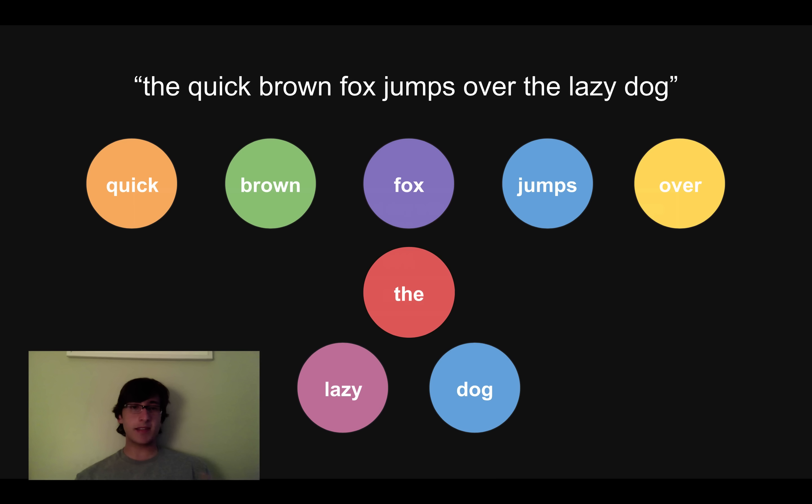And the way I'm going to define a state is as you read the sentence, whatever word you're currently reading is the state that you're in. So if I go through and read this, I start out in the the state. I go to quick, I go to brown, I go to fox, I go to jumps, I go to over, back to the the state. Then finally I go to lazy and then dog.